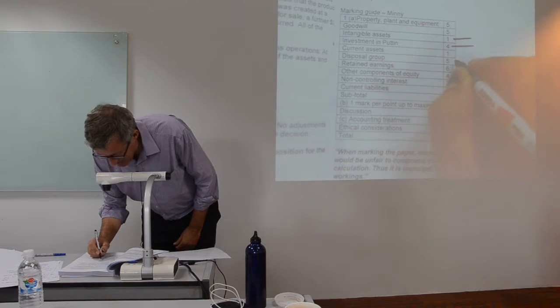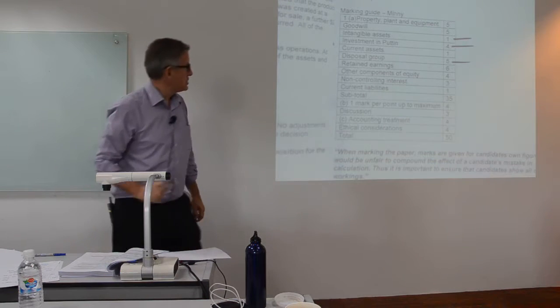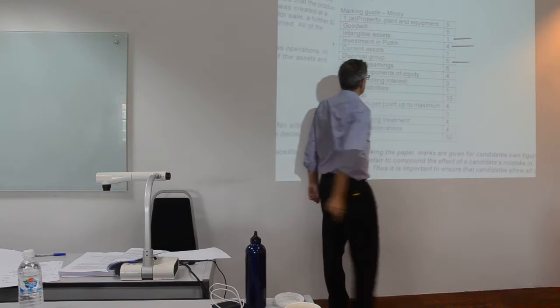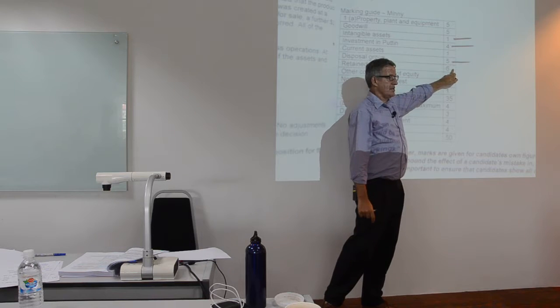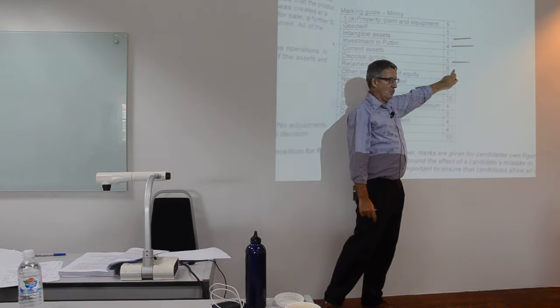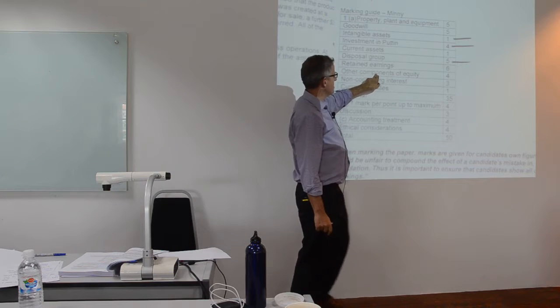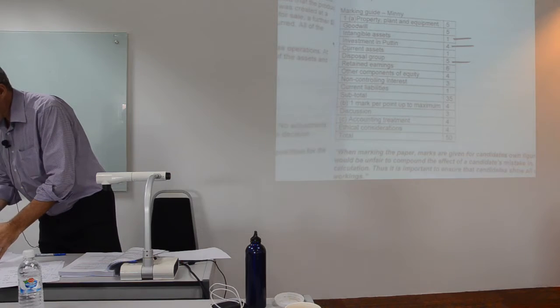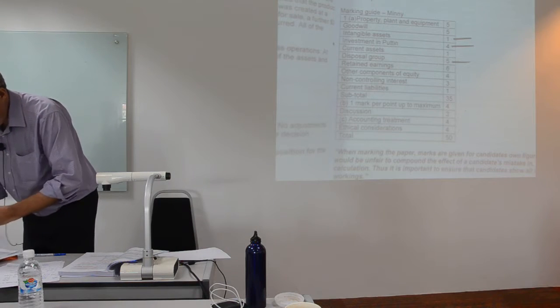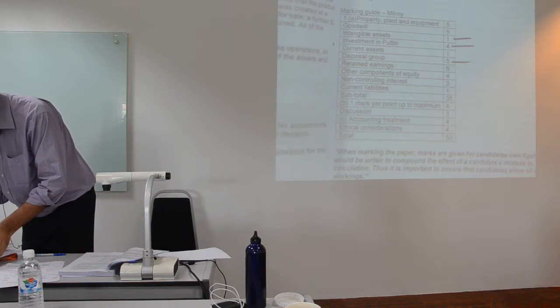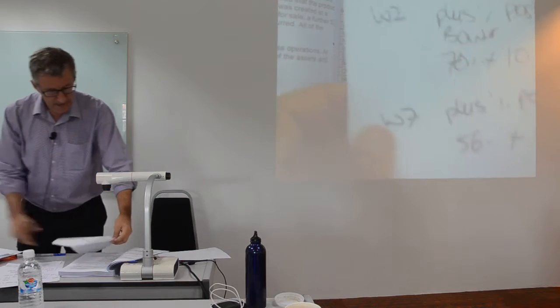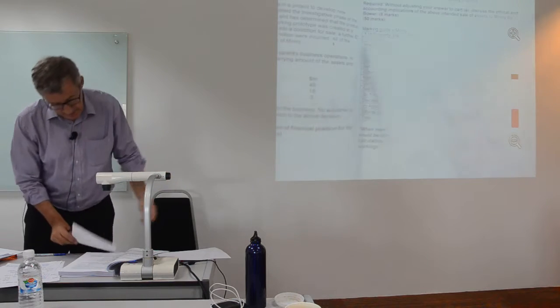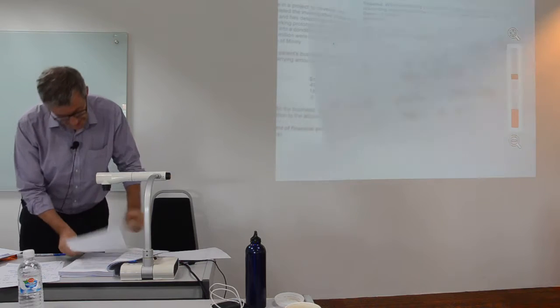We've got our mark for current assets. What we haven't got is the disposal mark. So, we've added together, we've got our current asset mark sorted out. Retained earnings are worth 6. We've got 6 out of 6. Other components of equity is worth 4. We've got 4 out of 4. Let me show you other components of equity. In other components of equity, this was worth 4 marks.